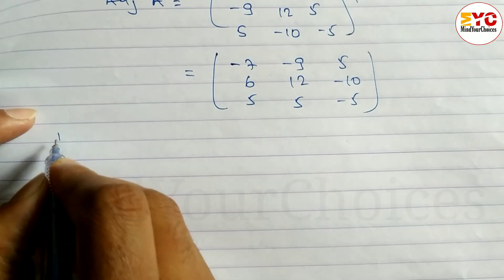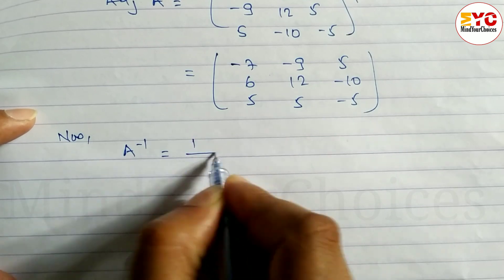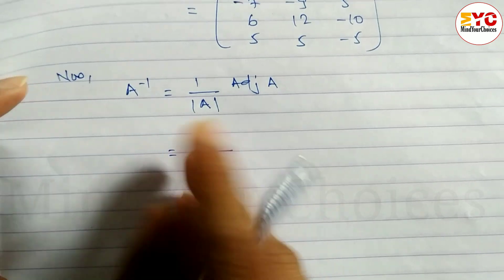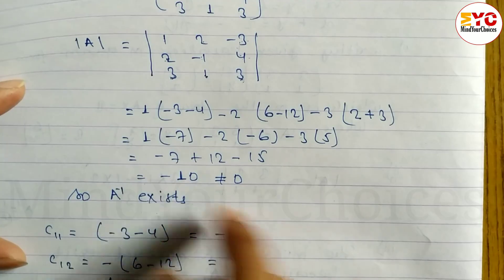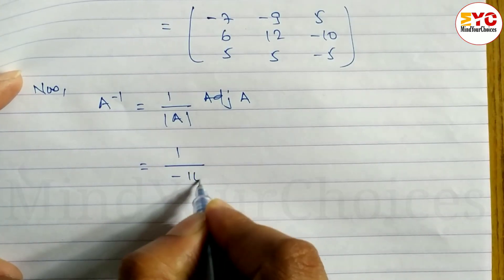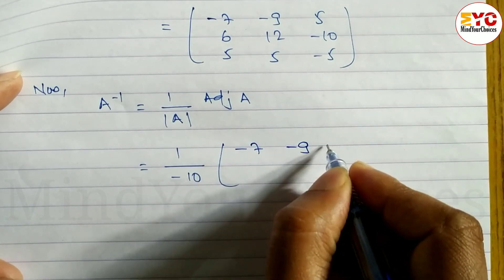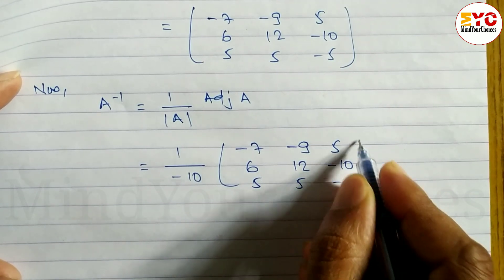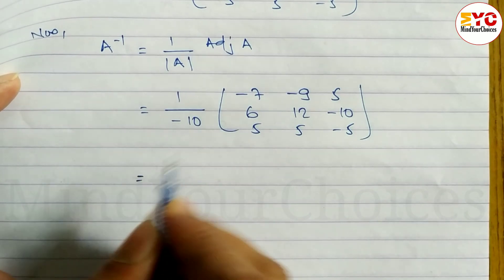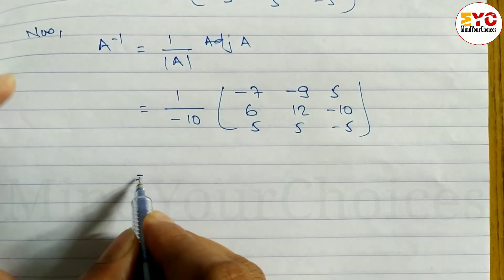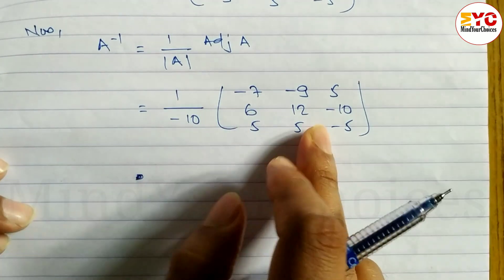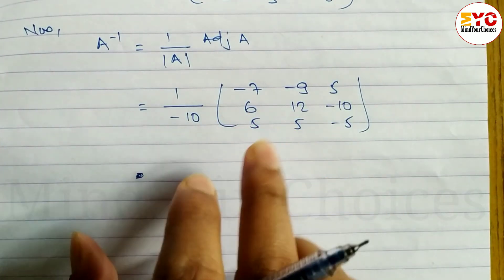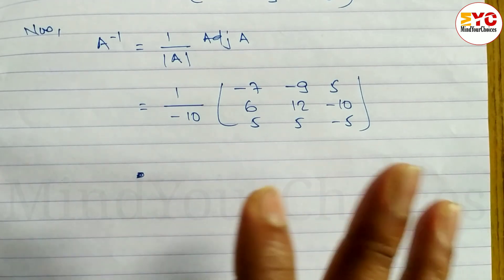Now we can find A inverse. The formula for A inverse is (1 / determinant A) × adjoint A. The determinant A was found to be minus 10. So A inverse equals (1 / minus 10) times the matrix: minus 7, minus 9, 5; 6, 12, minus 10; 5, 5, minus 5. We will leave it in this form since multiplying gives fractions.